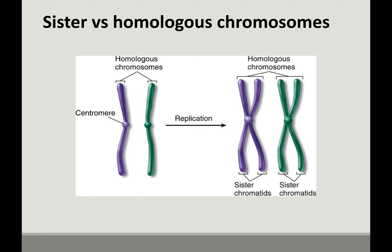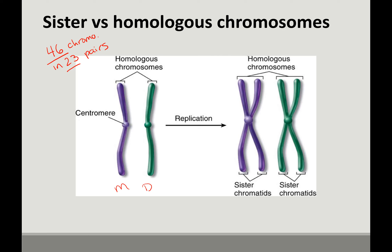Another concept you should know — but which many students confuse — is the idea of sister versus homologous chromosomes. Humans have 46 chromosomes in 23 pairs, so you have 23 homologous pairs. That means the chromosome you have from your mom and the one from your dad — chromosomes 1 through 22 and your sex chromosomes — carry similar types of genetic information.